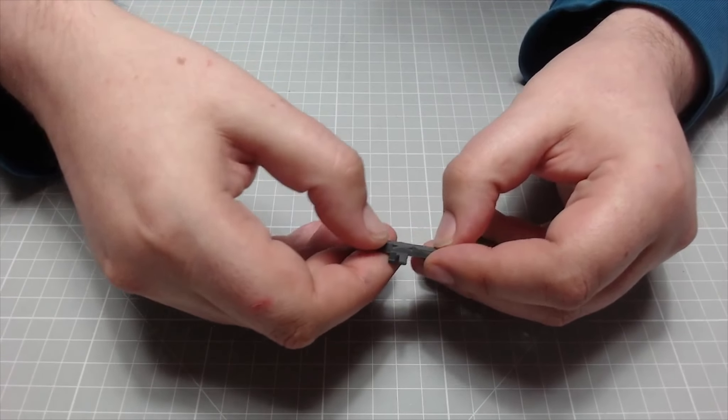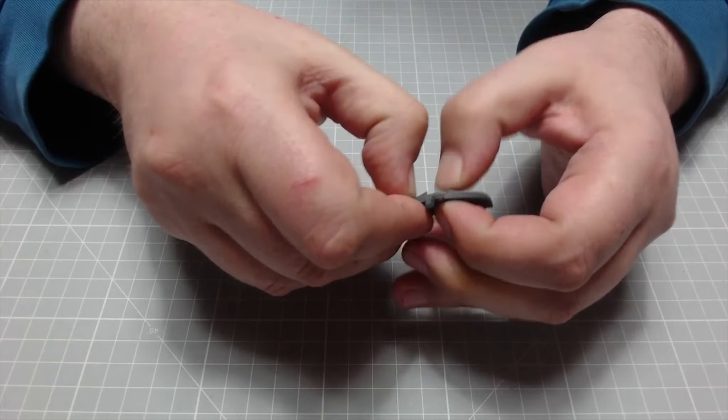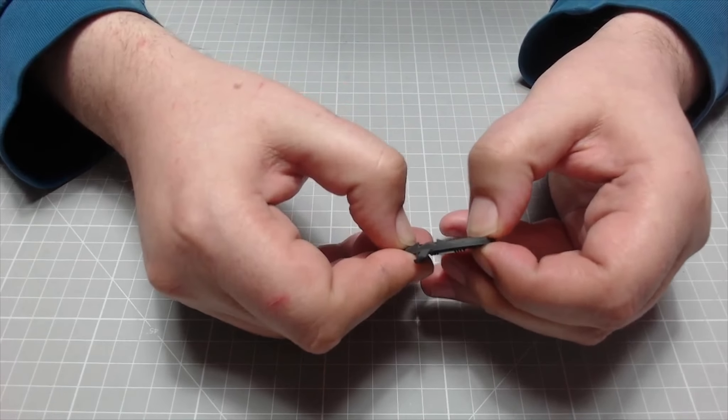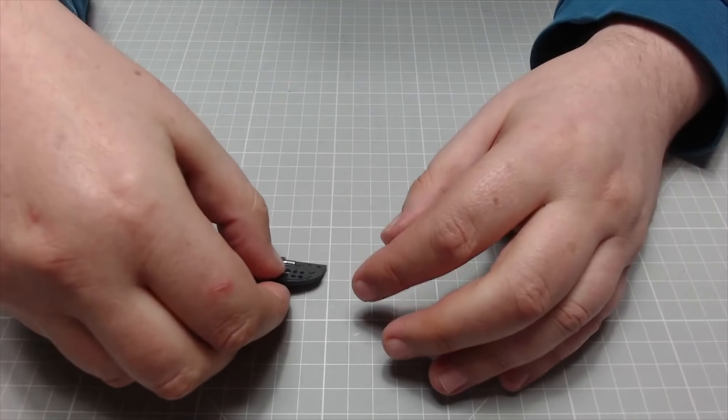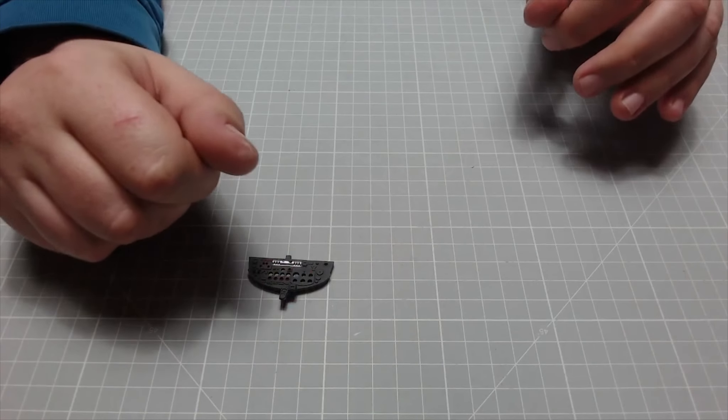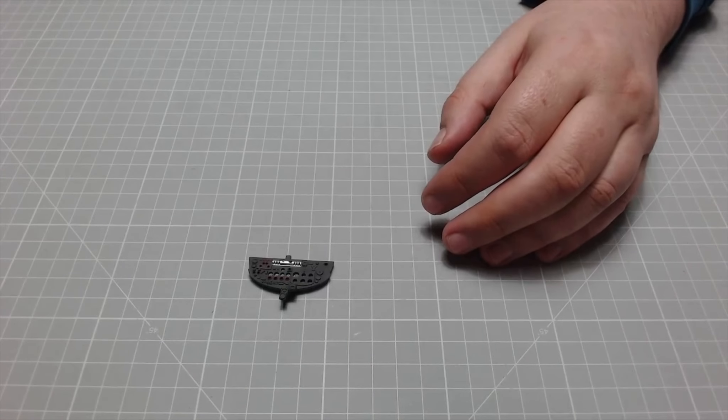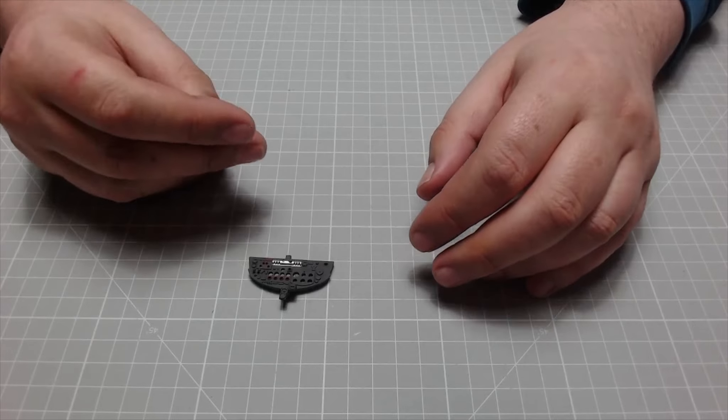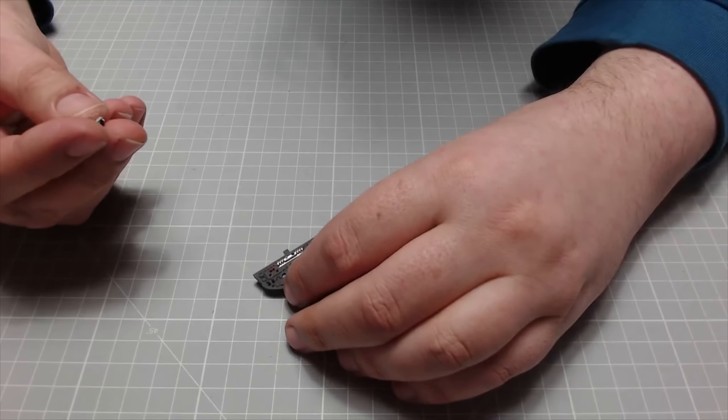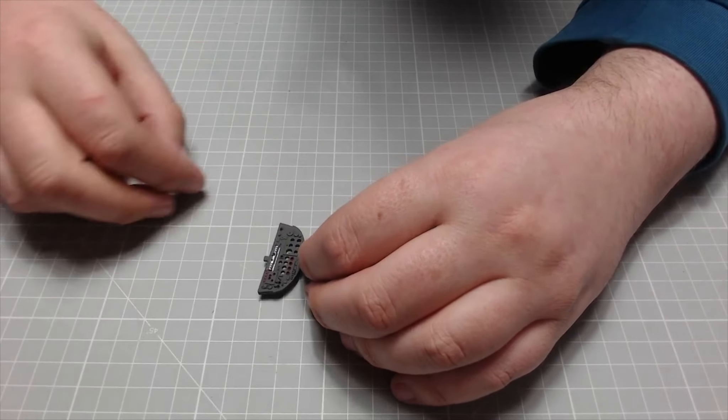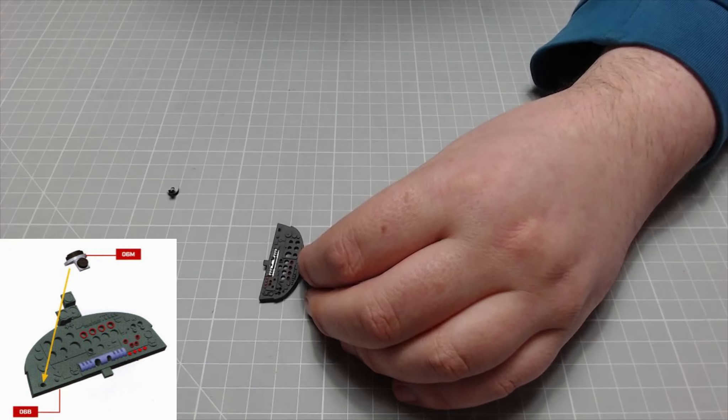And we're just going to push that into place just like that. Okay, the next piece we need is this bit here, this is the compass. This is just going to be going into there, again it's half moon shape, you can only go in one way.